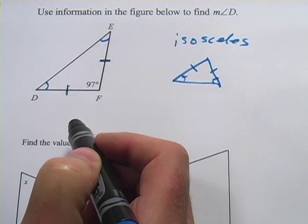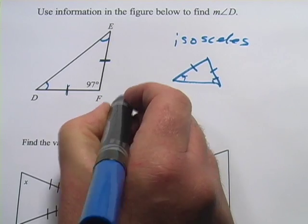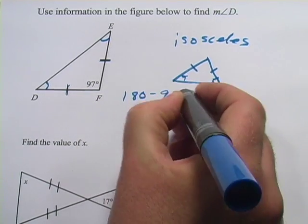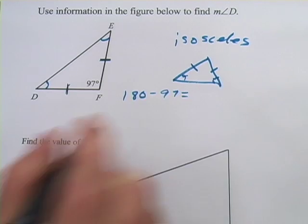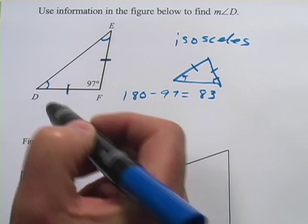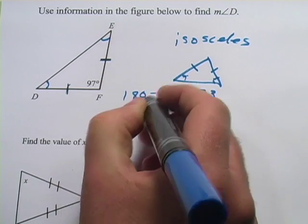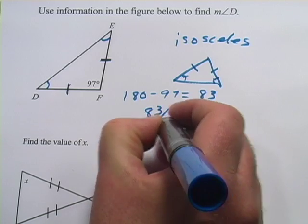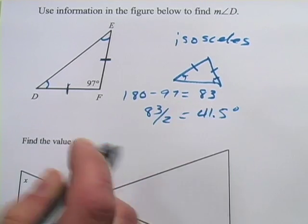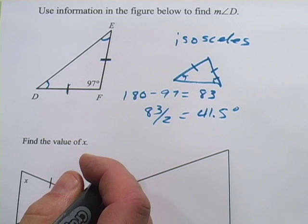All three angles are going to add up to 180 degrees. So I subtract the vertex angle here. So 180 minus 97, and that's 83. And then that has to be split evenly between the two base angles. So it's simply 83 divided by 2, which is 41.5 degrees. And that is the measure of angle D.